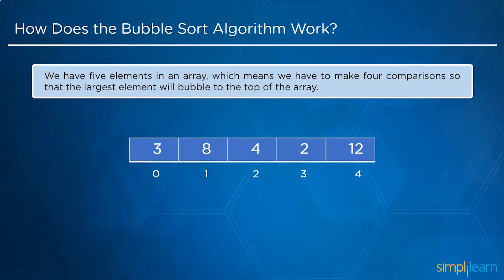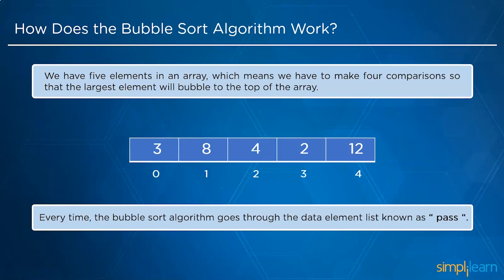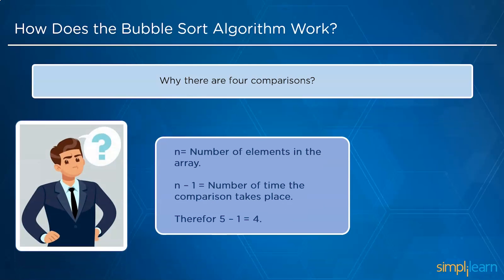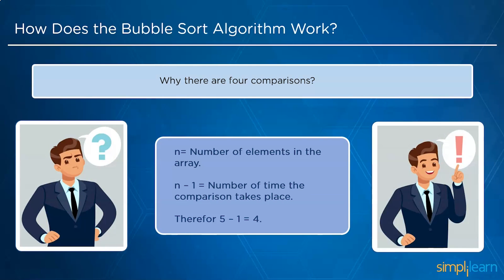The example consists of five elements: 3, 8, 4, 2, and 12, with index beginning at 0 and ending at 4. Each time the bubble sort algorithm goes through the data element list, it is called a pass. According to the formula, if n is the total number of elements, then the total number of comparisons needed is n minus 1. So with 5 elements, we need 4 comparisons or passes to sort the entire array.